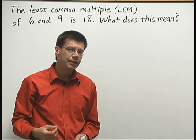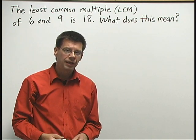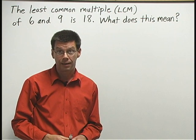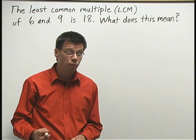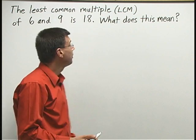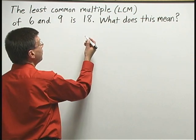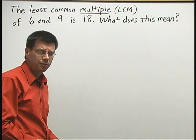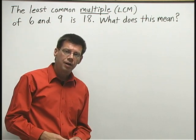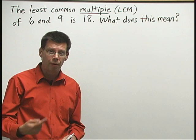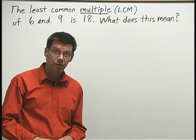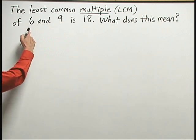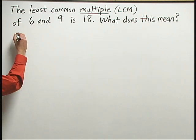Now, the words least common multiple each tell us something about what an LCM is. Let's look at one word at a time. First, let's just look at the word multiple. The multiples of a number are the numbers that you get when you multiply that number by the counting numbers. Let's look at the multiples of 6 first of all.